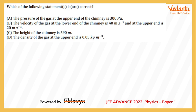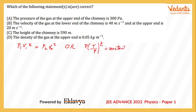I'll use the adiabatic process equation. pV^γ = constant can be rewritten in terms of pressure and temperature. Substituting, we get p^(1−γ) · T^γ = constant. With gamma = 2, this simplifies to T²/p = constant.